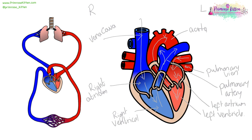If you want to check you have the path of blood right, then we need to be looking at capital letters. It goes through the vena cava, the atrium, the ventricle, then the artery. Back through the vein, into the atrium, to the ventricle, and then the aorta. So it goes: vena cava, atrium, ventricle, artery, vein, atrium, ventricle, aorta — V-A-V-A-V-A. If you don't have that pattern, you've made a mistake somewhere.